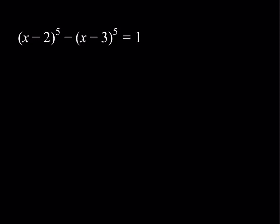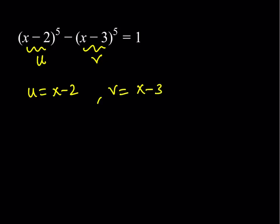So what I'm going to do here is make some substitutions. First of all, I would like to call this u and I'd like to call this v. So that gives me u is equal to x minus 2 and v is equal to x minus 3. We know that x minus 3 is just u minus 1, but we're going to do this a little differently — that's why I used two different variables. From this, I get u to the fifth power minus v to the fifth power is equal to 1 as my first equation.